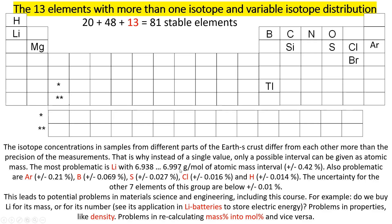The most problematic is lithium. For lithium, its atomic mass is anywhere between 6.938 and 6.997 grams per mole — an uncertainty of plus or minus 0.42%, meaning the difference between the lowest and highest possible values is almost one percent. For lithium, we surely do not know its atomic mass with the required four-digit accuracy.